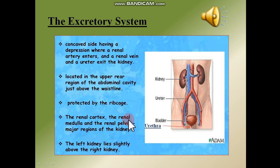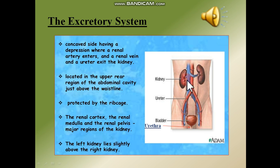Previously you saw in the cross-sectional view of the kidney the major regions. The left kidney lies slightly above the right kidney. The ureter then enters into the urinary bladder, and the exit point of the urinary bladder is known as the urethra.